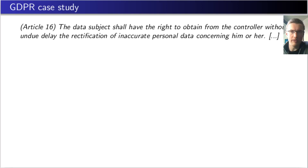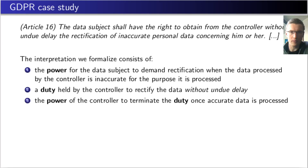As an example of what we can do using EFLINT, I included here a summary of the interpretation of Article 16 that we have formalized in the paper. Article 16 says that data subjects, which are natural persons that can be identified within data, have the right to demand rectification of inaccurate data held by the data controller. A data controller is a party collecting and processing data for a certain purpose. The interpretation we formalized consists of: firstly, the power for the data subject to demand rectification when the data processed by the controller is inaccurate for the purpose it is being processed; secondly, a duty held by the controller to rectify the data without undue delay; and the power of the controller to terminate the duty once accurate data is being processed.